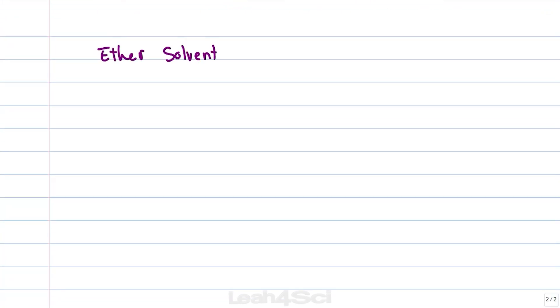First make sure you review my polar protic and aprotic solvent video link below. And then take a look at ether compared to something like alcohol. The common ethers you'll see for Grignard formation are Et2O which is diethyl ether or THF tetrahydrofuran which is a heterocyclic ring with an oxygen in it. Compare this to other common solvents that you're used to seeing like water or alcohol.